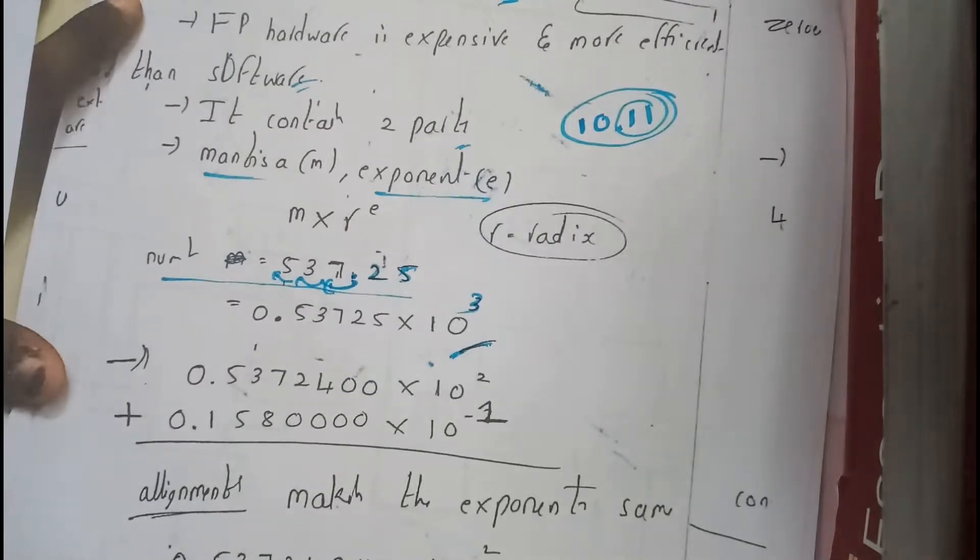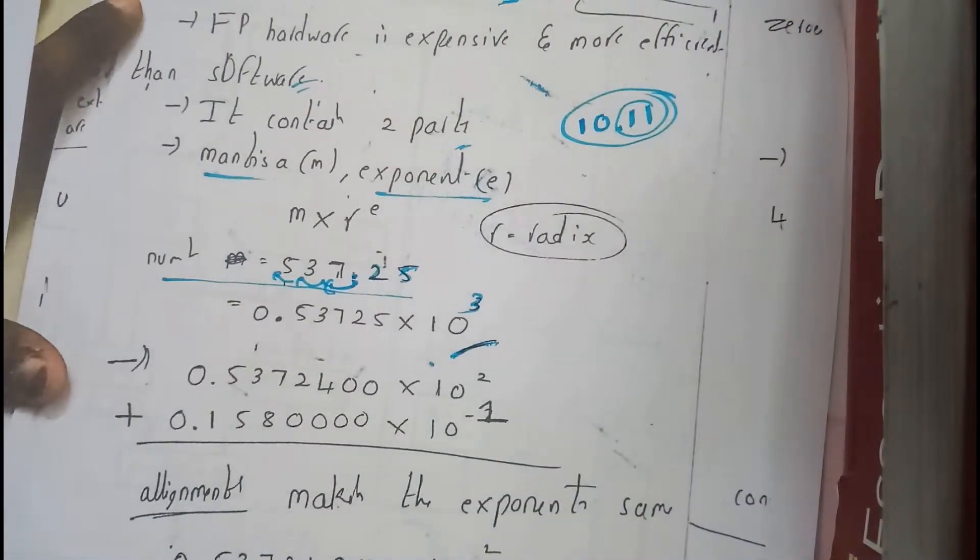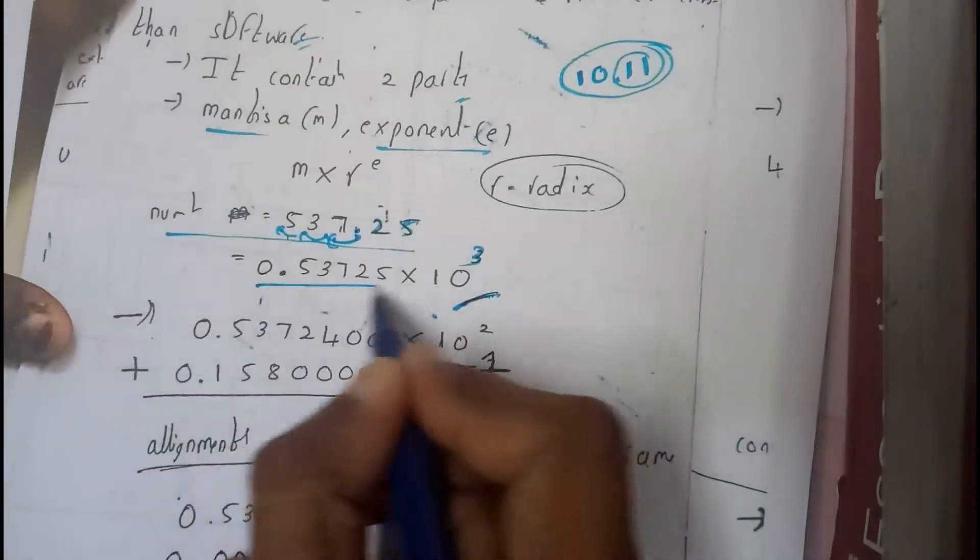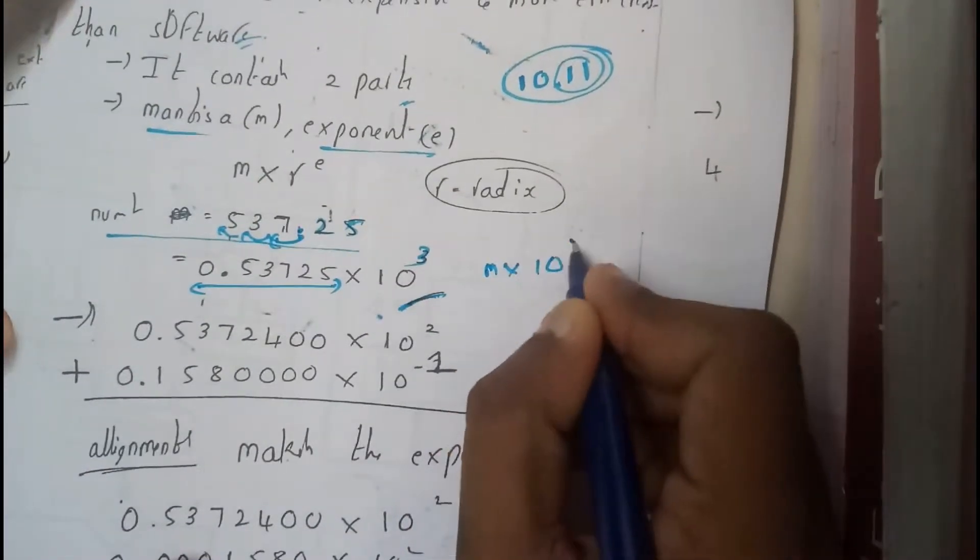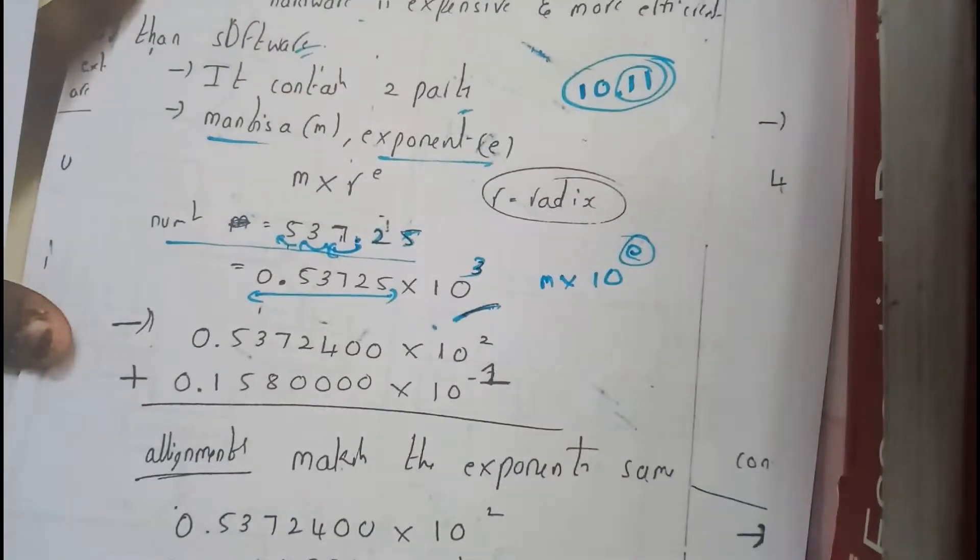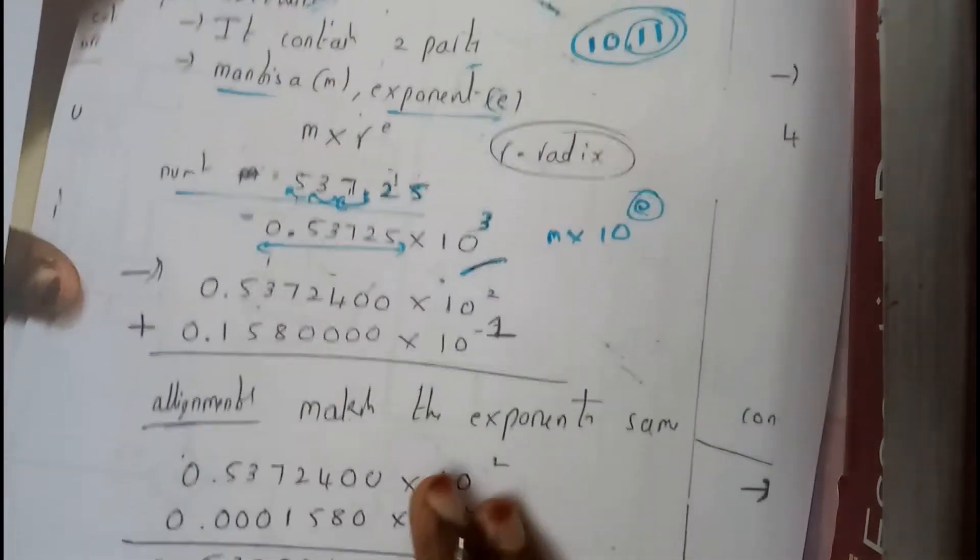This is how we will be representing a number in terms of mantissa and exponent. We will be calling this whole part as mantissa, m into 10 power e, where e is our exponent. Now you may ask, how will we be doing the addition or subtraction or multiplication?